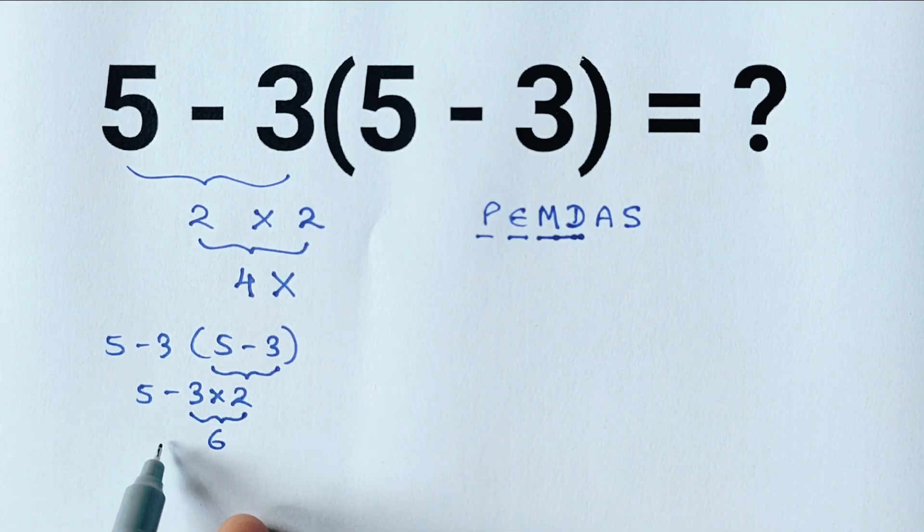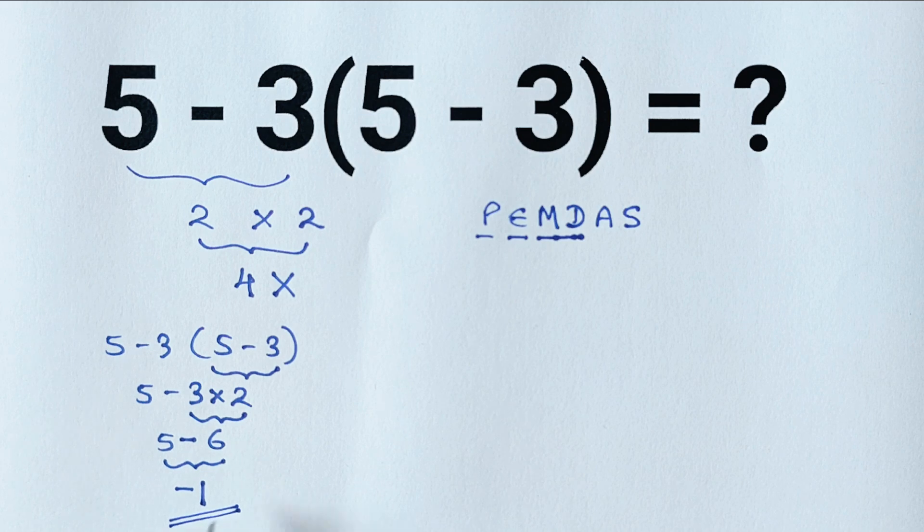Now we have 5 minus 6 which equals negative 1. So the correct answer is negative 1. Let me know if you got the right answer in the comments and see you in the next video.